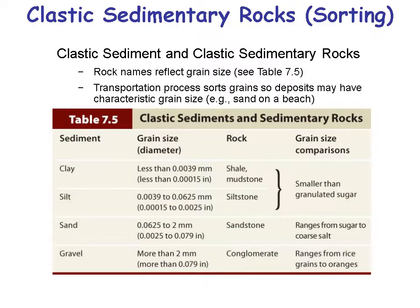This diagram shows rocks with different grain sizes by actual diameter. Gravel is over two millimeters, sand is under two millimeters, going smaller to silt and shale. The way to tell silt from clay is to put it in your teeth — if it's crunchy, it's silt; if it's not crunchy, it's clay. When you become a geologist, you get used to tasting things. Transportation process sorts grains, so deposits may have a characteristic grain size.